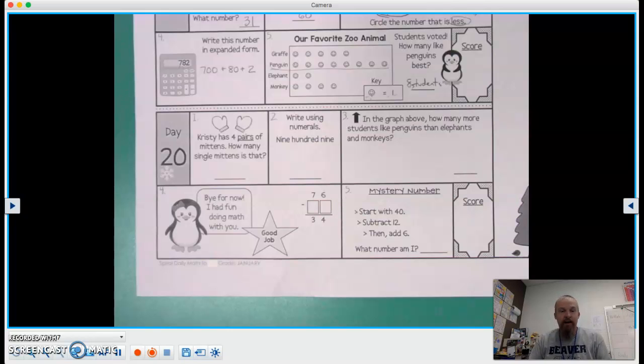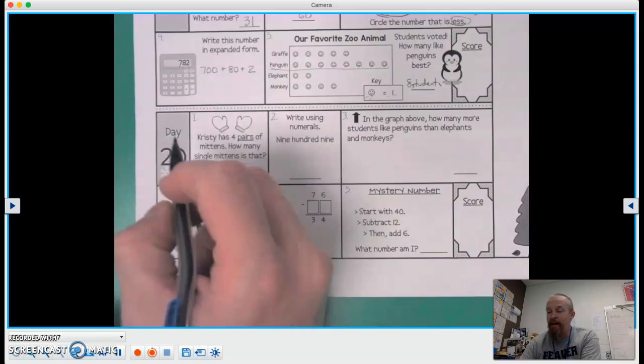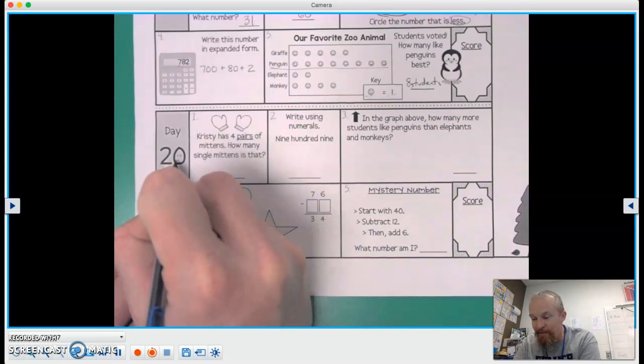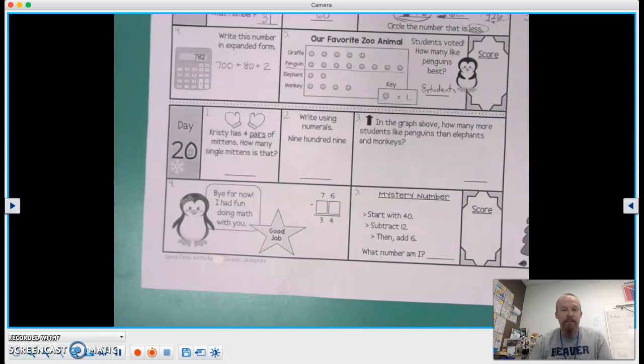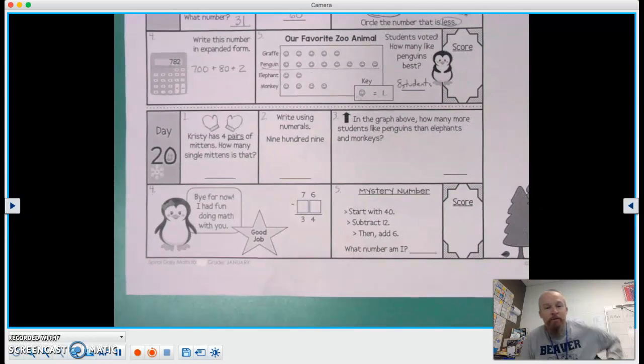All right there, boys and girls. We are on the final day of our January Daily Math. So here we go, number one. Christy has four pairs of mittens. How many single mittens is that?